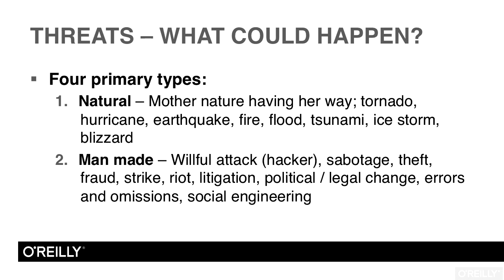If a flood destroys your production facility, you'll experience losses. The second family of threats is a man-made threat — a human willfully or accidentally affecting your profits. We have the willful attacker, like a hacker breaking into your web server and the database that holds all your customers' names, addresses, and credit card numbers. This would also include employee sabotage, willful destruction of property, theft of property, riot, and litigation — lawsuits. A customer suing you because they fell on your property will introduce losses.